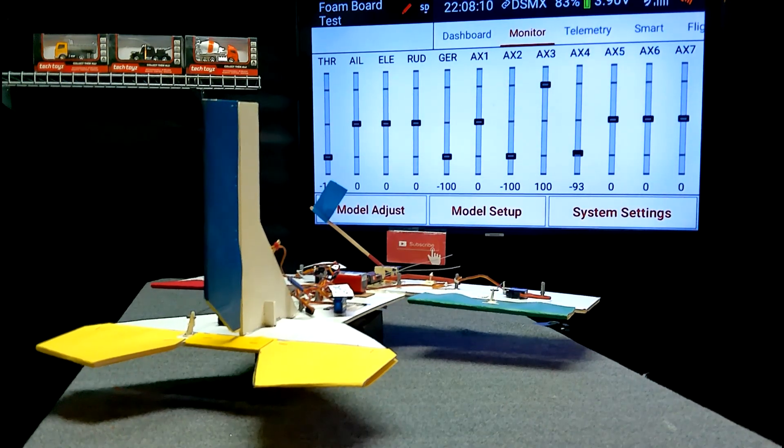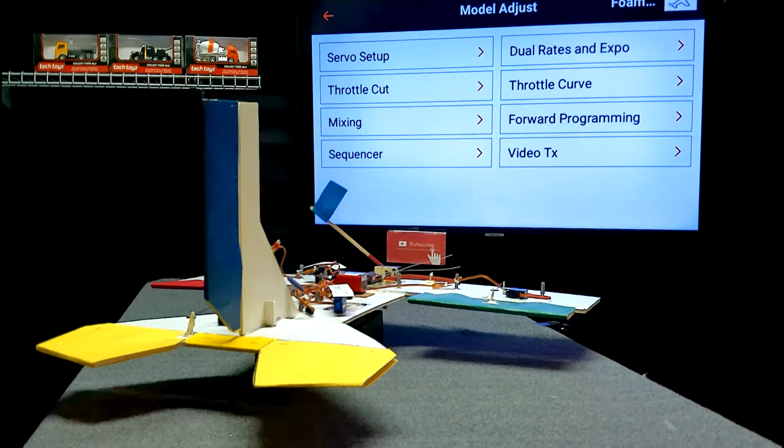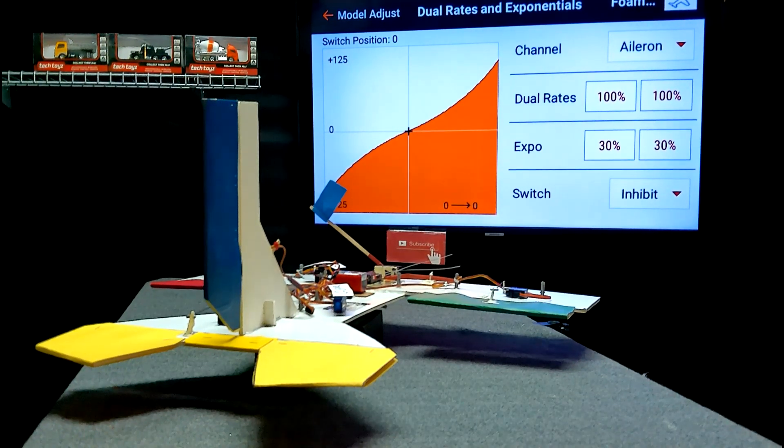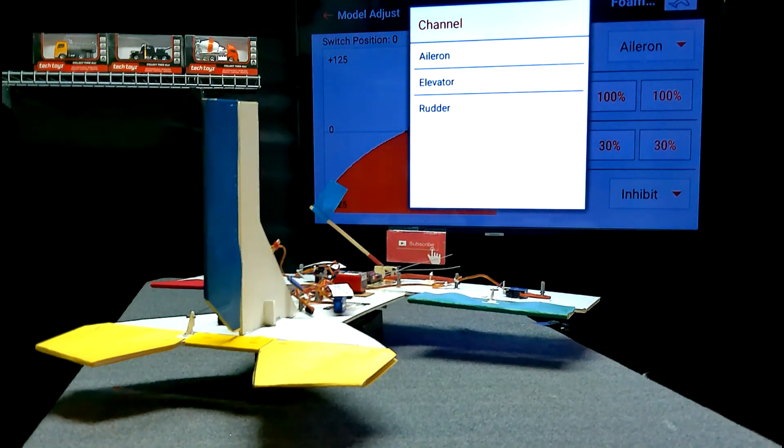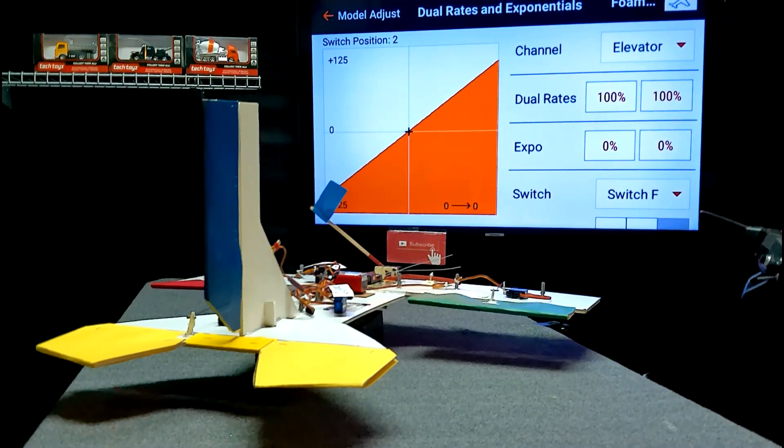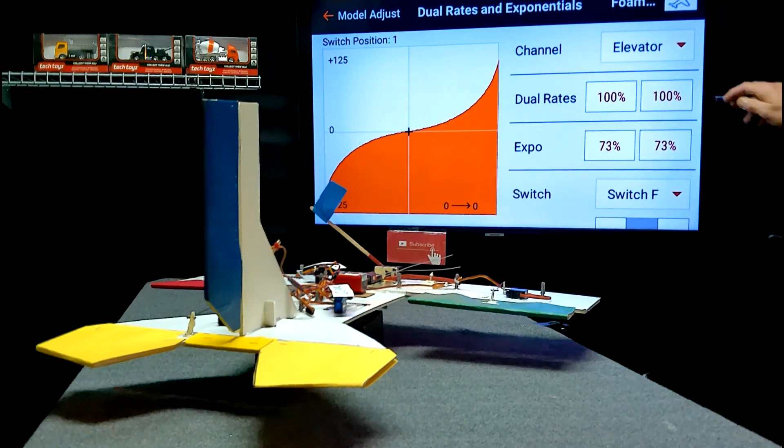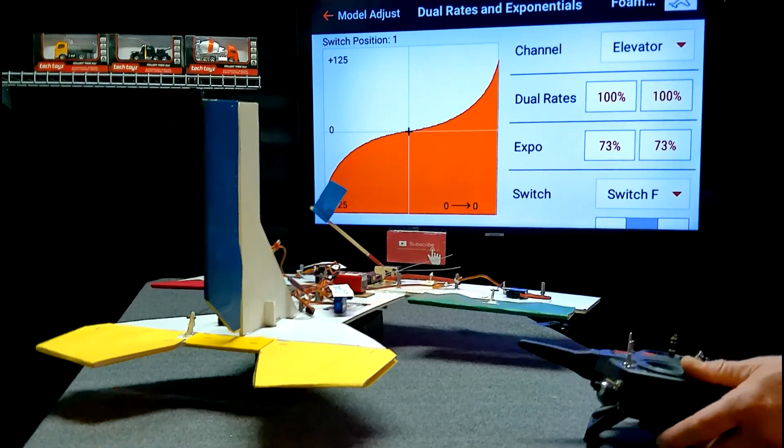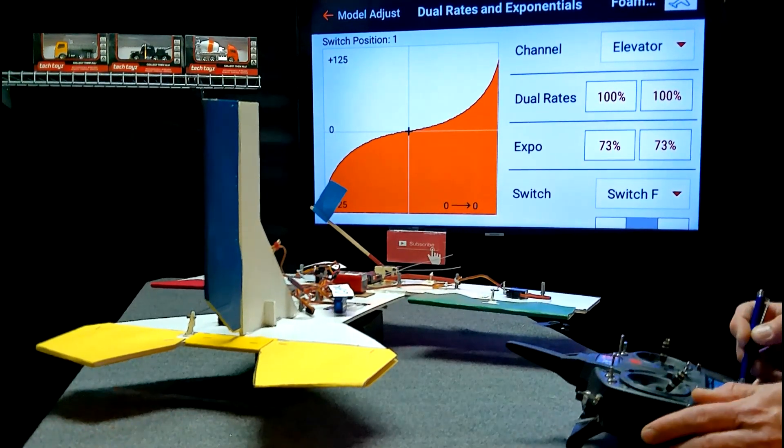Now, for one more demonstration, we'll go back to our dual rates and Expo. And in our setting on the elevator here, one setting, 100% travel, no Expo. The next setting, 100% travel, and we had a positive 73% Expo. So if we change that to negative Expo.